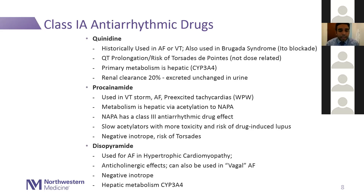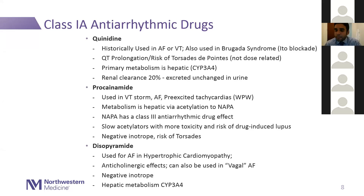Procainamide is a negative inotrope and carries a risk of torsades primarily through the NAPA class 3 effect and QT prolongation from its metabolism. Disopyramide is often used in AFib in patients with hypertrophic cardiomyopathy. It has a strong vagolytic and anticholinergic effect. In patients with vagal AF — basically nighttime atrial fibrillation occurring only during periods of high vagal tone — you could theoretically use disopyramide. It is a negative inotrope and reduces contractility, which is desirable in hypertrophic cardiomyopathy. Its metabolism is hepatic through CYP3A4.